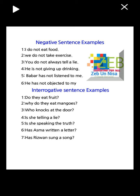Interrogative sentence examples: number one, is he telling a lie? Number two, is she speaking the truth? Number three, has Asma written a letter? Number four, has this one sung a song?